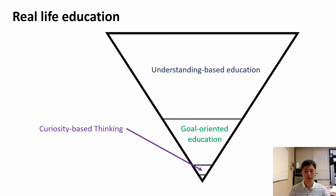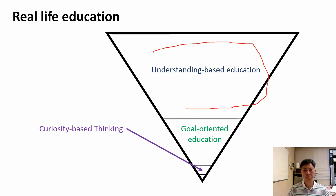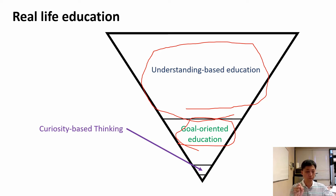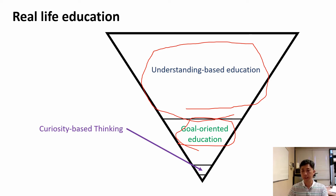Let me summarize what the real-life education system looks like. Understanding-based education is around 90% from my observation — I haven't seen much goal-oriented education actually implemented. Because goal-oriented education means the student has to figure out how to get a result — like doing a PhD or master's where there's an unknown research question, and you develop the methodology yourself. If teachers explain how to do it, that's not goal-oriented education.